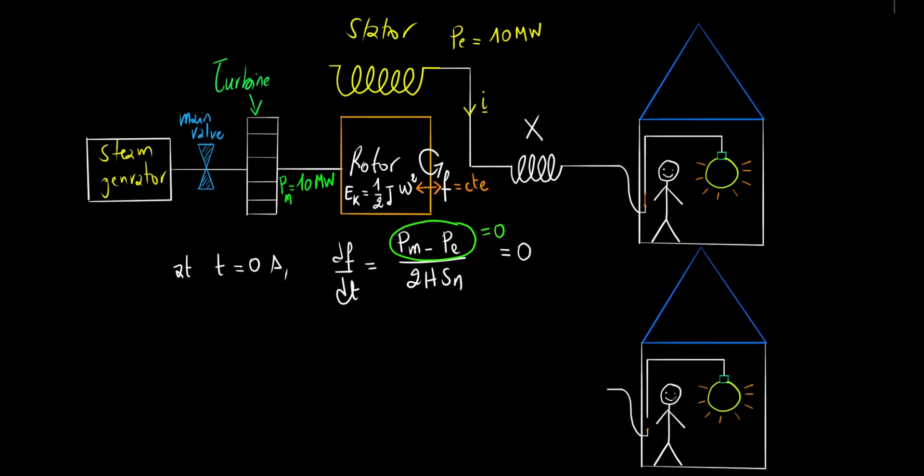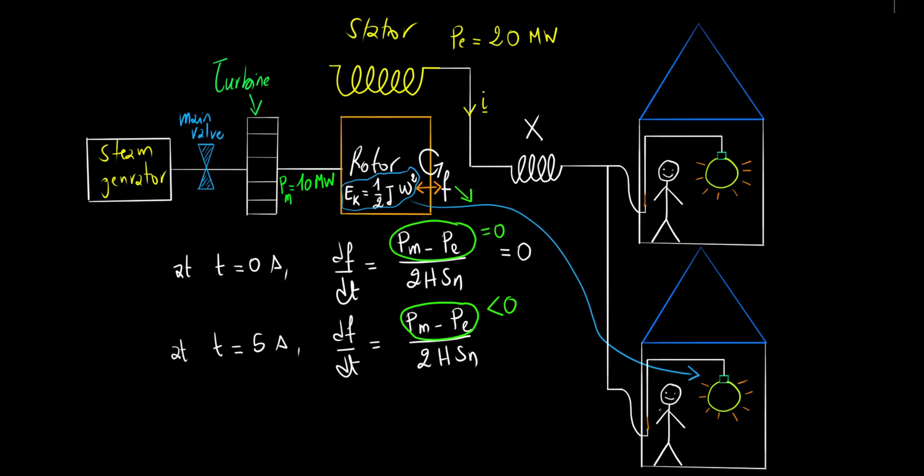Now things get interesting. Your neighbor, inspired by your bright idea, flips his switch as well, powering up another gigantic 10 megawatt bulb. Suddenly, the total electrical power from the stator doubles to 20 megawatts. Checking our swing equation again, we now have a negative frequency change rate since electrical power exceeds mechanical power, causing our rotor frequency to drop. Makes perfect sense, right? The rotor's kinetic energy is literally being drained to supply your neighbor's bulb.